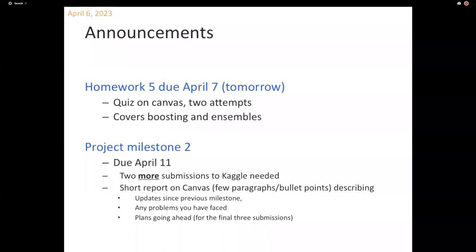There's also the project milestone two — it's due next week. That requires two more submissions to Kaggle, just a checkpoint to make sure that things are going smoothly. You can submit a report on Canvas that's literally just a collection of bullets of what you've done since the previous milestone, what kinds of problems if any that you've faced.